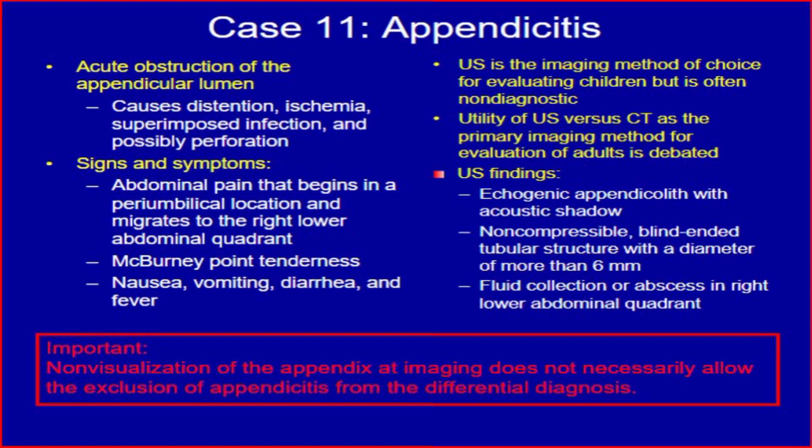The utility of ultrasound versus CT as the primary imaging method for evaluation of adults is debated. Ultrasound findings include: echogenic appendicolith with acoustic shadow, non-compressible blind tubular structure with a diameter of more than 6 millimeters, and fluid collection or abscess in the right lower abdominal quadrant. Importantly, non-visualization of the appendix at imaging doesn't necessarily allow exclusion of appendicitis from the differential diagnosis.